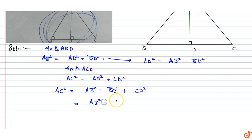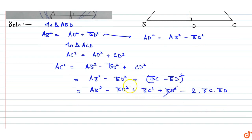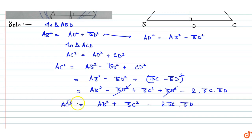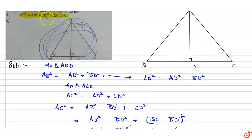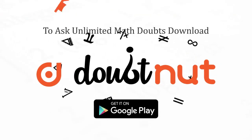Substituting, AC square equals AB square minus BD square plus (BC minus BD) whole square, which expands to AB square minus BD square plus BD square plus BC square minus 2 into BC into BD. Hence proved.